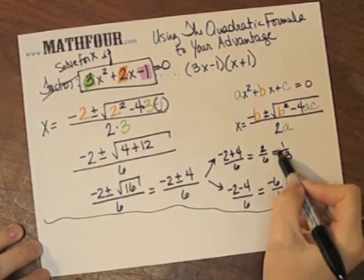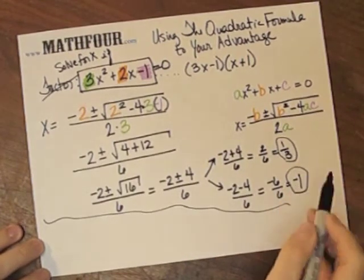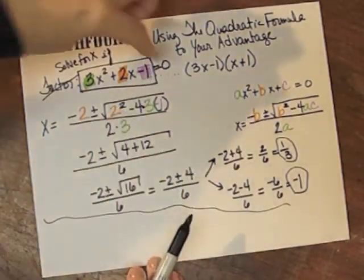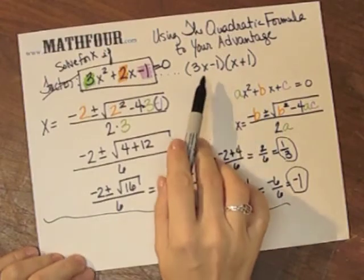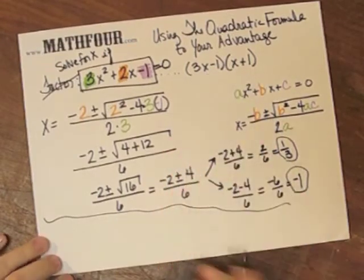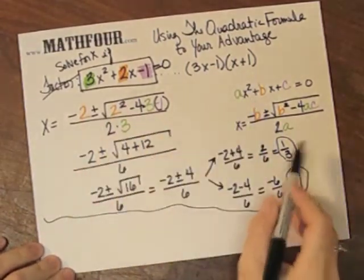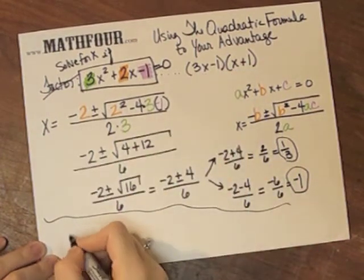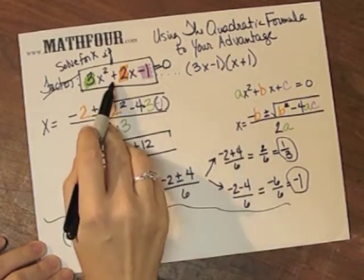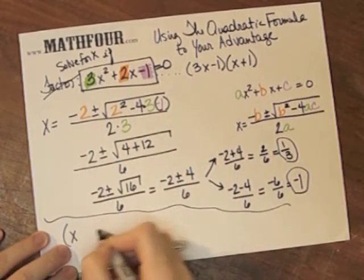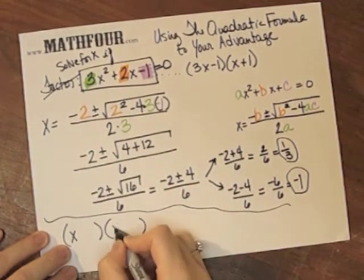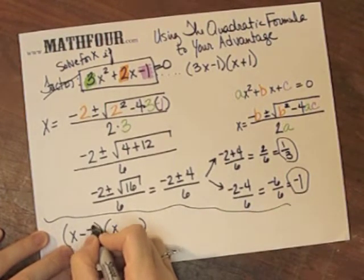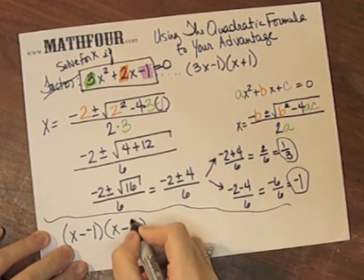So let's take these two solutions. Remember, we solved for x when the expression equals 0 — that wasn't our original problem; our original problem was to factor. The factorization is always x minus each of these solutions. So it's x minus negative 1, which gives x plus 1, and x minus 1 third.